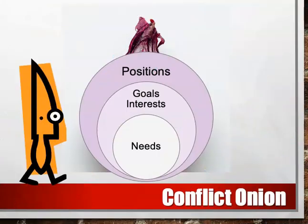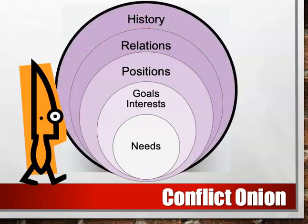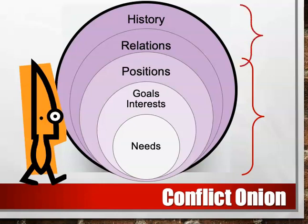You can also push the visualization a bit further by adding two more outer circles — one to brainstorm relational factors that need to be taken into consideration, and another to consider the deeper history of the relationship, including past conflicts. So you can use this tool to just focus on needs, goals, interests, and positions to get a better picture of the conflict episode, or you can expand it to visualize some aspects of the epicentre. Take a few moments now to use the tool to visualize some aspects of a conflict that you have experienced.